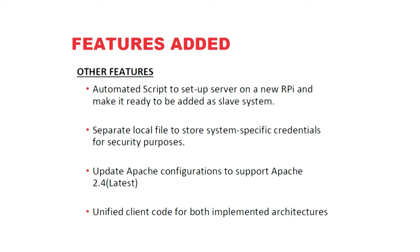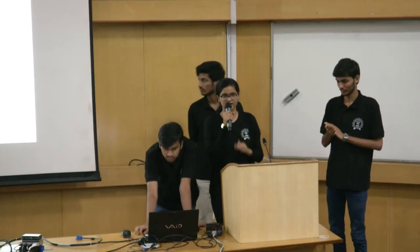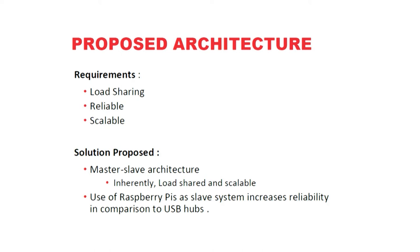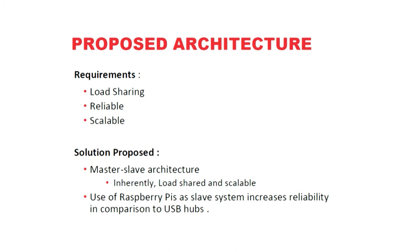The existing architecture had a single server connected to a bunch of SBHS devices through USB hubs. There were two problems: USB hubs were unreliable, and if an error occurred in the master server, the entire system collapsed. We came up with a new master-slave architecture: one master connected to a bunch of Raspberry Pis acting as slaves, with SBHS devices connected to each slave. This overcomes the defects — load is shared between master and slaves so the master can't be overburdened, Raspberry Pis proved more reliable than USB hubs through experimentation, the system is scalable, and if one Raspberry Pi fails, only the SBHS devices connected to that slave fail rather than the entire system.